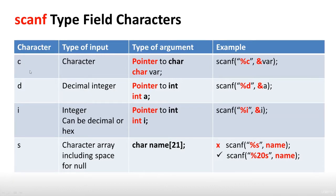The first format specifier is %c, and the variable it expects as an argument is a pointer to a character. For example, you can say scanf("%c", &variable) where the variable is of char type. In that case, scanf will read the next input from the input stream and pass it to your variable. The next one is %d, which is for decimal integers — it does not accept hexadecimal.